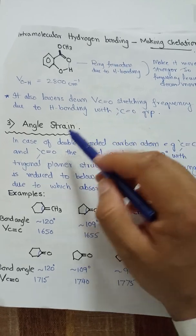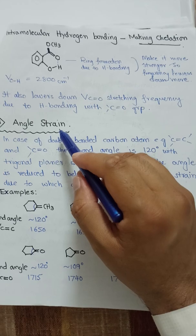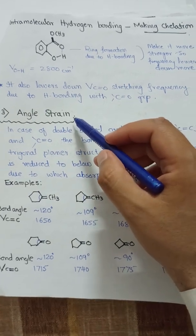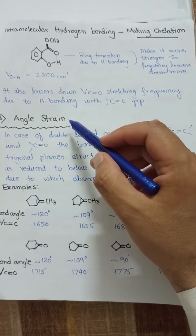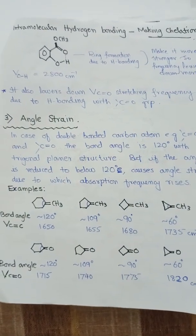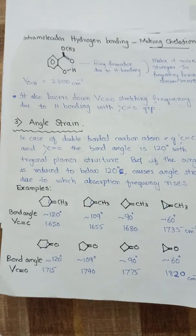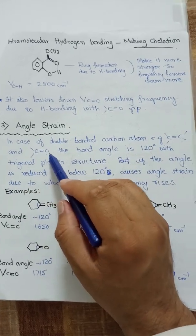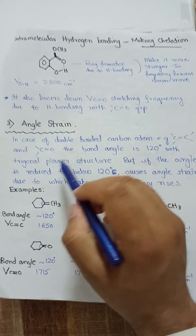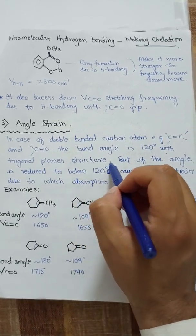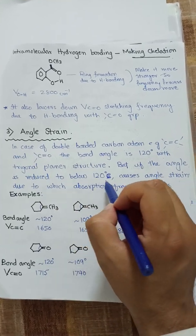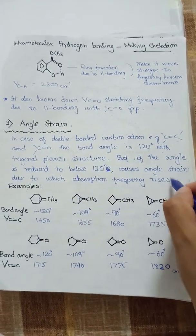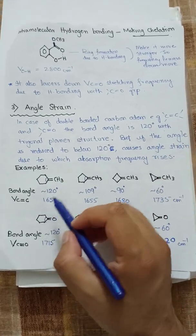The third factor affecting absorption frequency is angle strain — the deformation of bond angles. If we take a double-bonded carbon atom, such as in a carbonyl group or alkenes, the bond angle is 120° due to the trigonal planar structure and sp2 hybridization. If the angle is reduced below 120°, it causes angle strain, and due to this the absorption frequency increases.